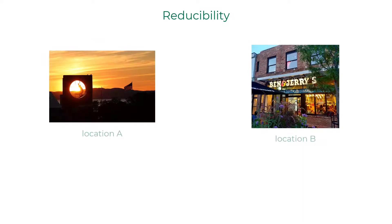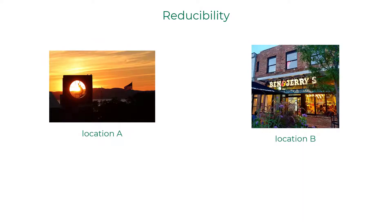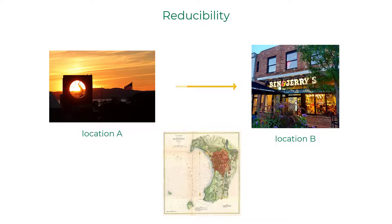Here is another example. The problem of walking from location A to an unknown location B in a city. It reduces to finding the directions on a map for that city.